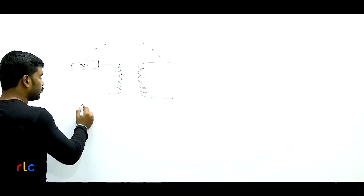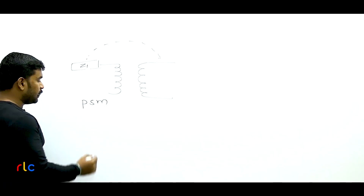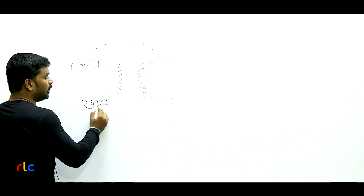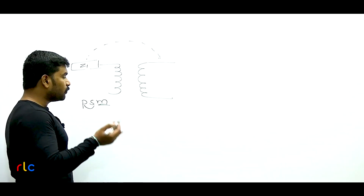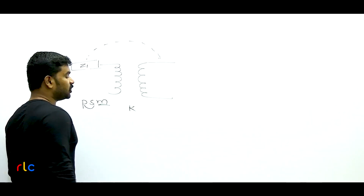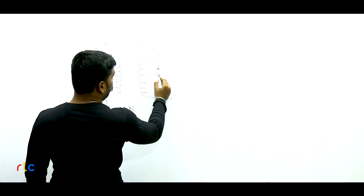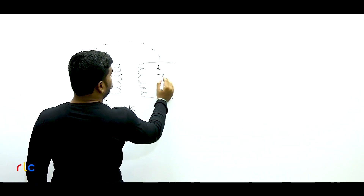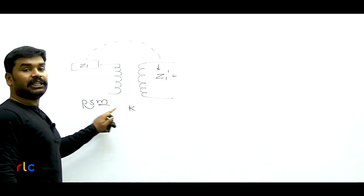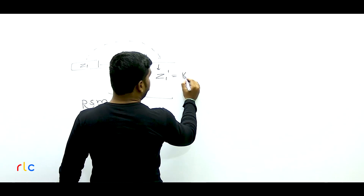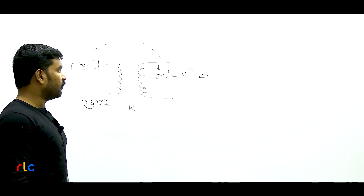We use a technique called PSM — Primary to Secondary Multiply. When transforming Z1 from primary to secondary, multiply by K squared (transformation ratio K). So Z1 referred to secondary becomes Z1 dash = K² × Z1.